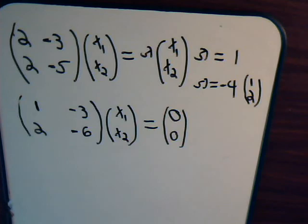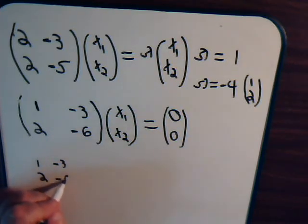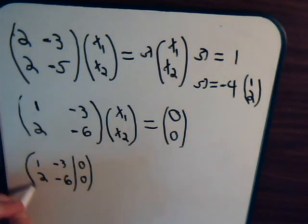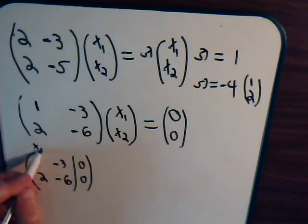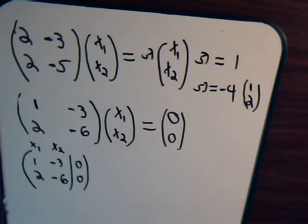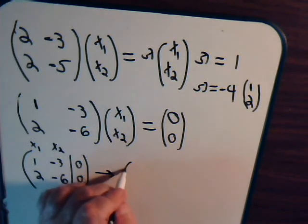Let's write this in augmented matrix form. We have 1, 2, minus 3, minus 6. The columns here correspond to x1, and these columns correspond to x2. If we multiply the first row by negative 2 and add, that will make the leading entry zero.